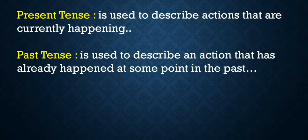Past tense is used to describe an action that has already happened at some point in the past. For example, the action could have happened yesterday, a month ago or a year ago.